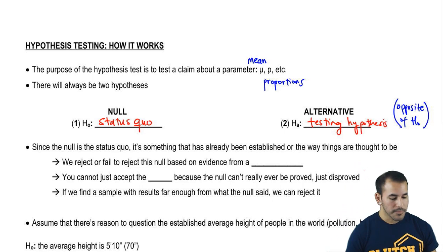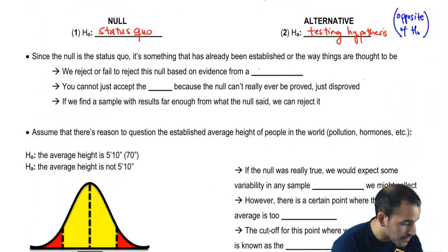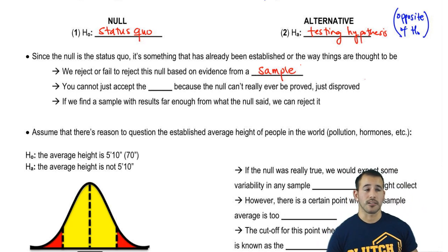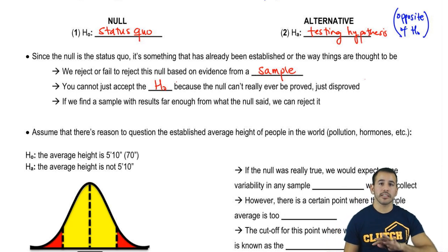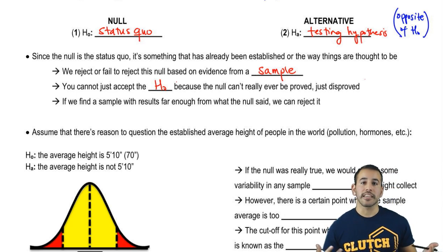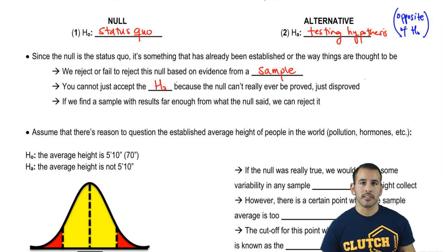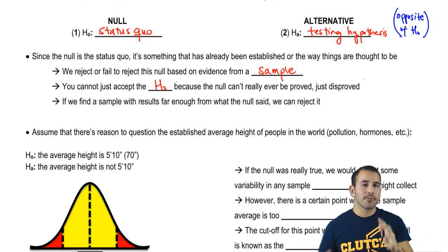Since the null is the status quo — something already established or the way things are thought to be — we either reject or fail to reject it based on evidence from a sample. We don't say 'accept' because the null can never really be proved, only disproved. As much support as you can have for a null hypothesis, you can only disprove it — you can never prove it's exactly how things work.